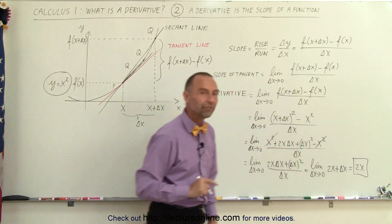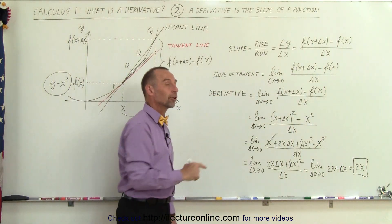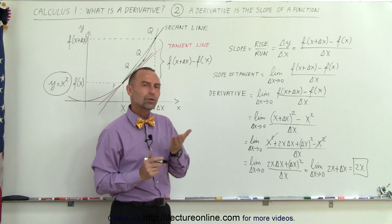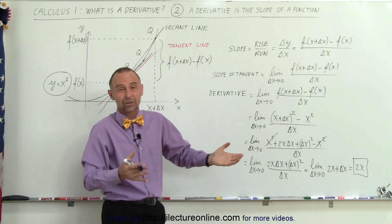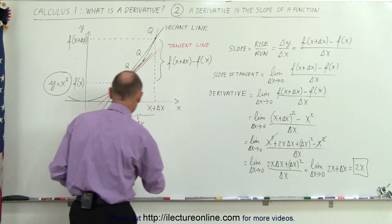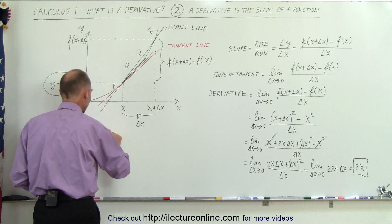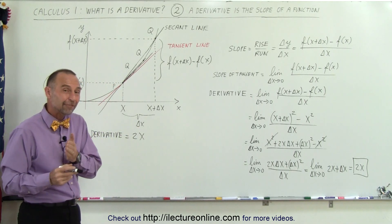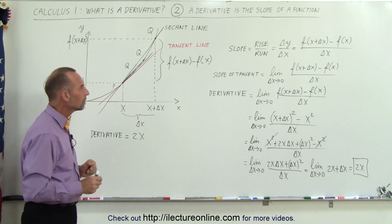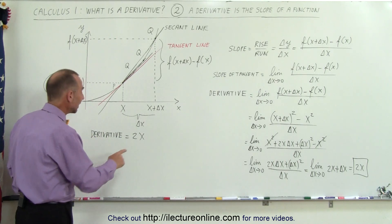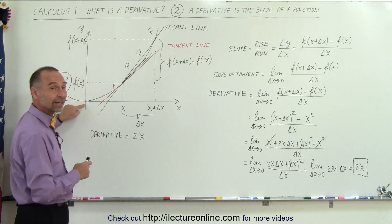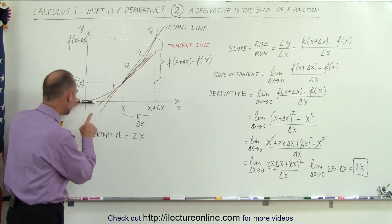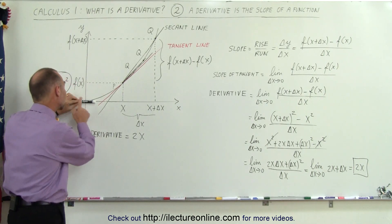Now there's no longer any delta x in the denominator, so we don't have to worry about dividing by 0. When I let delta x go to 0, that term vanishes and I'm simply left with 2x. This is the slope of the function — and also what we call the derivative of the function, because the derivative and the slope of the function are the same thing. If x equals 0, the derivative is 0, meaning the slope at the bottom of the parabola is 0.